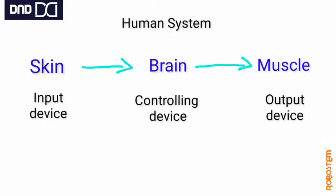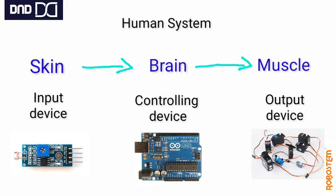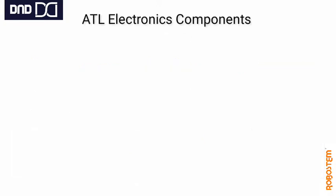The three components are: the input device, the output device, and the controlling device. The input device most of the time has sensors. The input device will send a signal to the controlling device, and the controlling device will activate the output device. For example, the LDR sensor is the input device, the Arduino Uno is the controlling device, and the actuator signal is the output device.